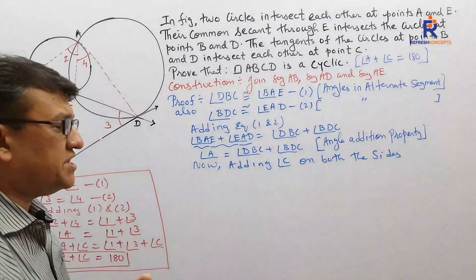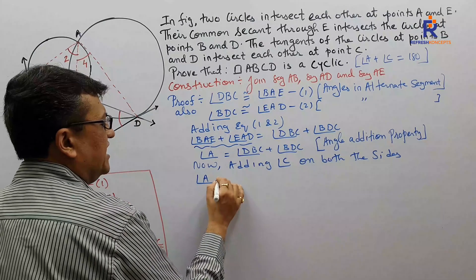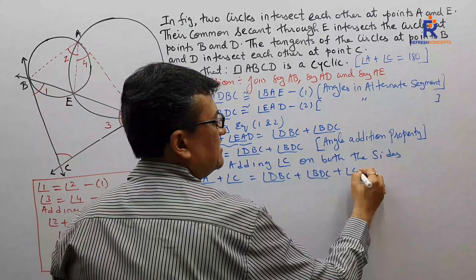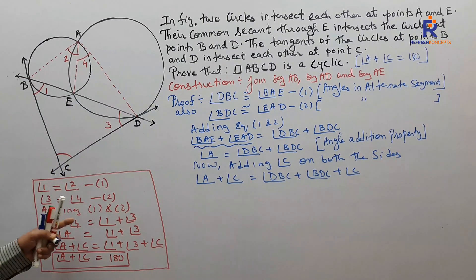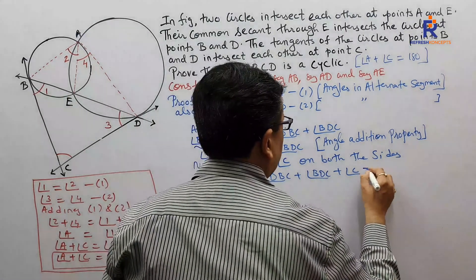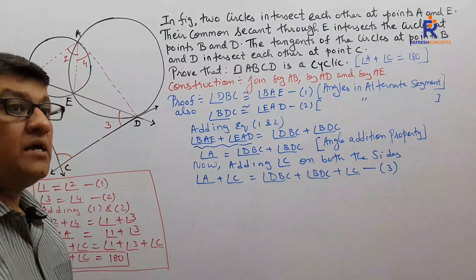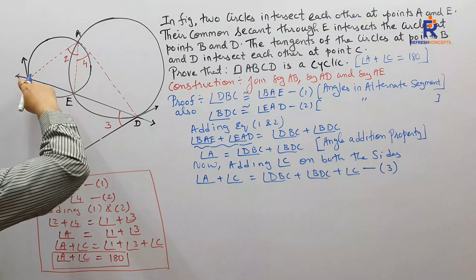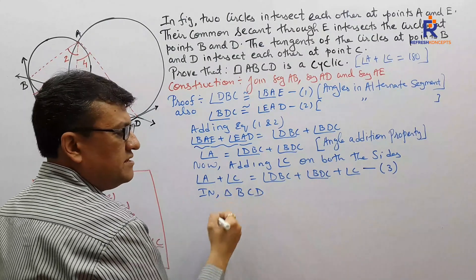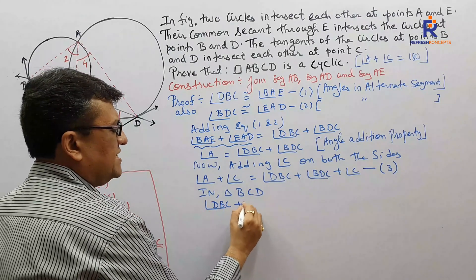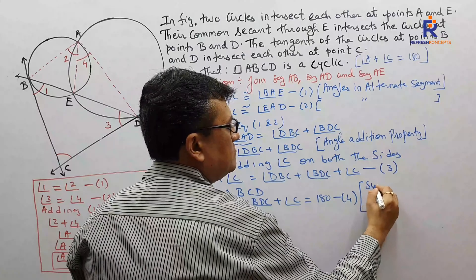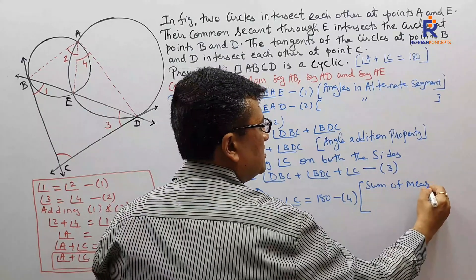Adding angle C on both the sides: angle A plus angle C equals angle DBC plus angle BDC plus angle C. Though I wrote this directly in the skeletal solution, in the main solution we write all statements and reasons. This is equation number 3. Now focus in triangle BCD — in triangle BCD.